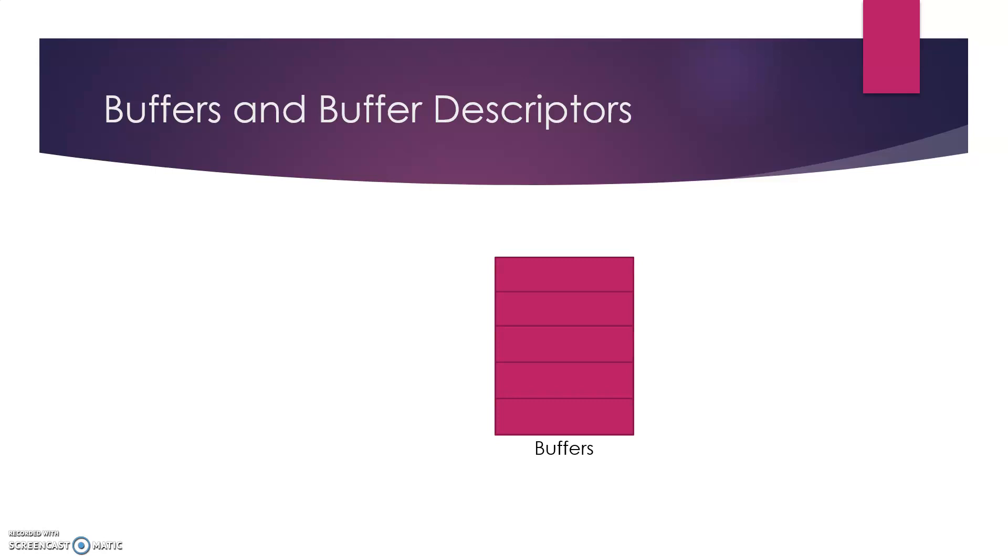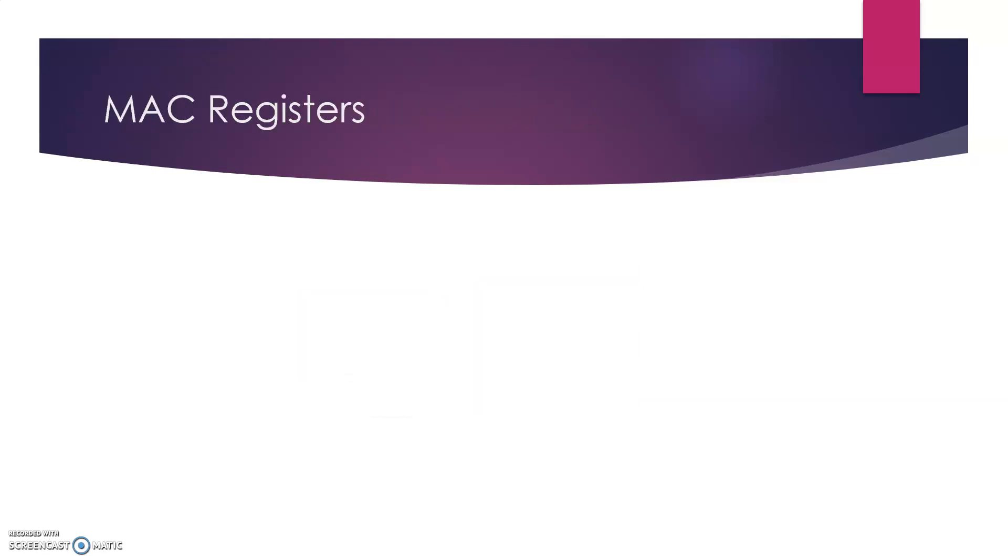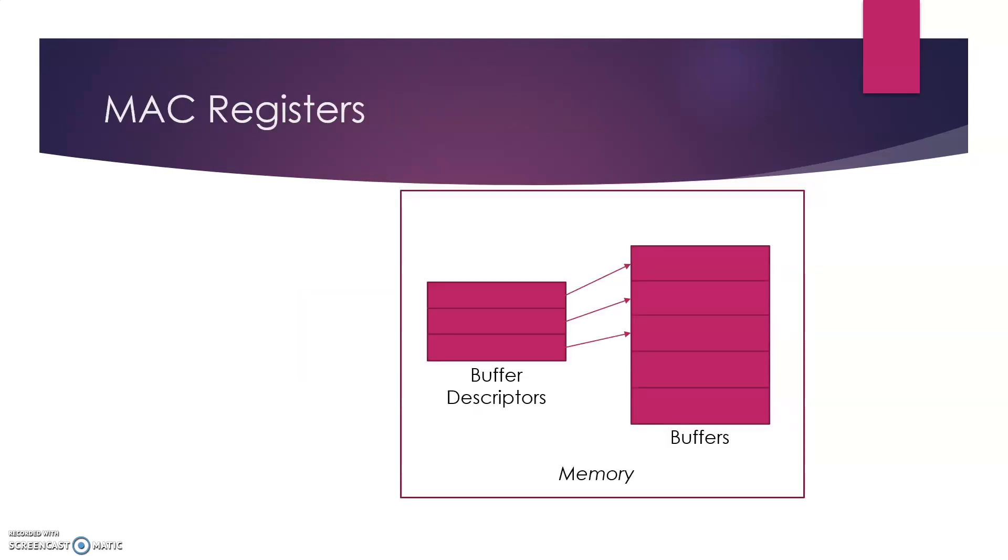Now obviously to save the data in a particular location, we would require the address of that location. So this is provided by the good old buffer descriptor. Thus each buffer descriptor points to a particular buffer. And both of them are stored in a memory location.